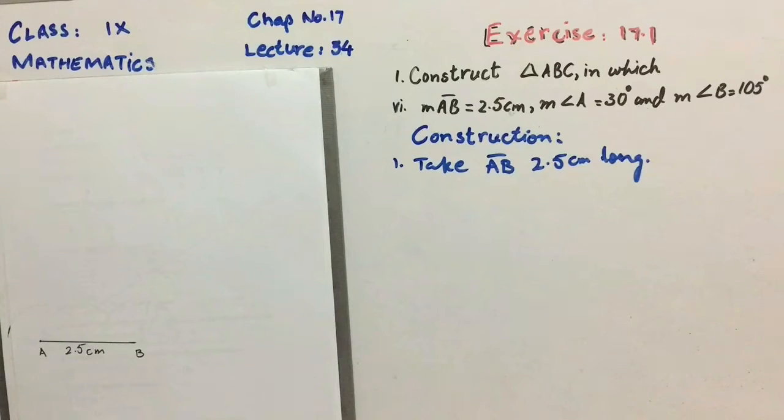Adjust your compass at any size of width. For the angle of 105 degree first of all I have to make an angle of 90 degree. You have already learnt the angle of 90 degree in lecture number 31.